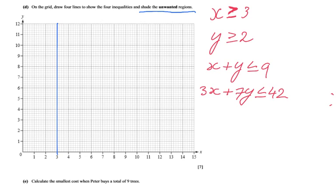We shade the unwanted region. We're interested in bigger. So here, x is bigger. So we're not interested in smaller. So I'm going to shade the unwanted region, which is on this side. Moving on to the next one.